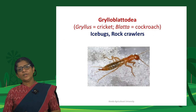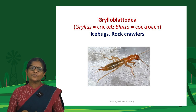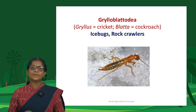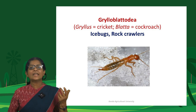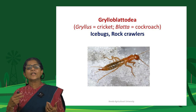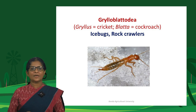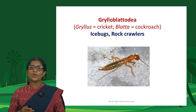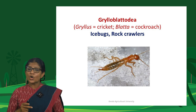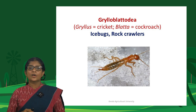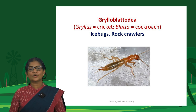Grylloblattodea combines 'gryllus' (cricket) and 'blatta' (cockroach), as they share characters of both crickets and cockroaches. They are commonly called ice bugs or rock crawlers and are not recorded from India — they are found in ice and snow habitats. Mantophasmatodea is another order not reported from India; it was the most recently described insect order, described in 2001 by Zompro from Namibia. They are called gladiators or heel walkers, as they walk on their heels with tarsi raised. The name combines 'mantis' (praying mantis) and 'phasma' (stick insects), as they resemble both.